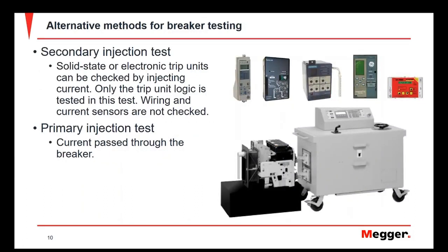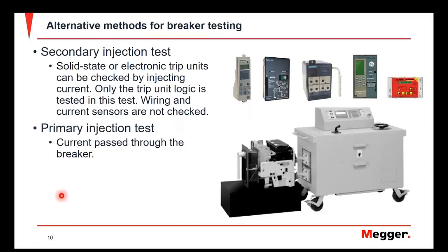Whenever we talk about primary current injection, there are always alternative methods mentioned, and we have to understand what we're talking about. One that always comes up is secondary injection. Secondary injection is a means of testing a circuit breaker that has a solid state or electronic trip unit. However, whenever we do that type of testing, that's the only part of the breaker we're really testing — those different manufacturers' electronic trip units.